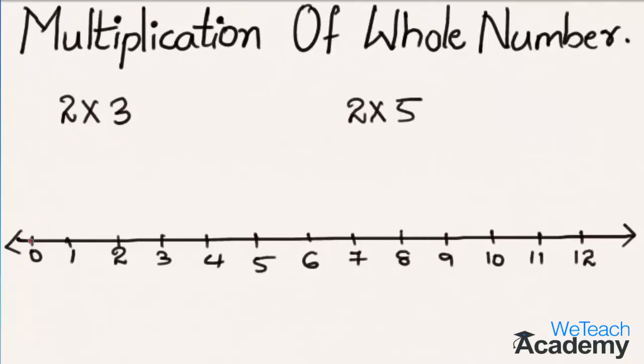Now let us consider a few more examples. So here to multiply 2 with 3, let us start from the 0 and 3 jumps each of 2 steps towards the right on the number line. And we reach here number 6, so we can say that 2 into 3 is equal to 6.